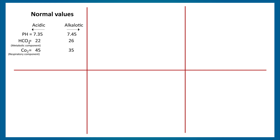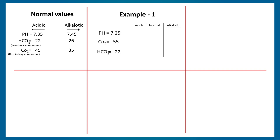Example one: pH is 7.25, CO2 is 55, and HCO3 is 22. pH at 7.25 is in the acidic range. CO2 at 55 is above the normal range of 35–45, so it falls in the acidic column. HCO3 at 22 is within the normal range. Since both pH and CO2 are in the acidic group, this is respiratory acidosis.